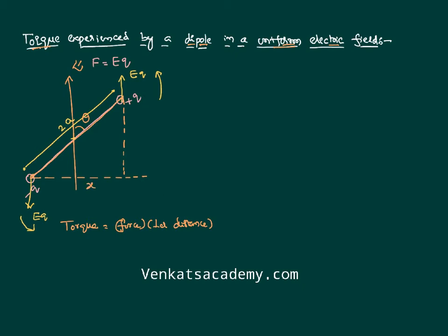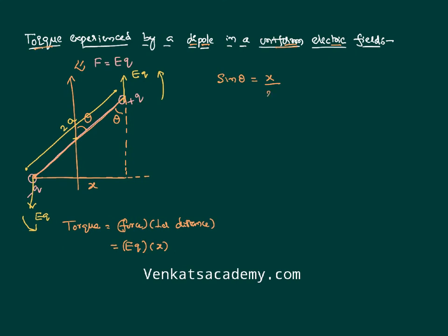If I call this perpendicular distance x, then the formula for torque is any one force out of the pair multiplied by the perpendicular distance x. I need to calculate x. Since this angle is theta, the other angle also becomes theta. Here x is the opposite side and 2a is the hypotenuse of the right-angle triangle. Using trigonometry: sin θ = opposite/hypotenuse = x / 2a, so x = 2a sin θ.